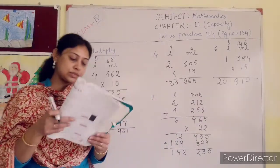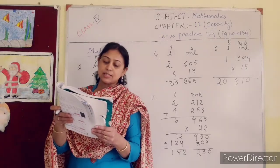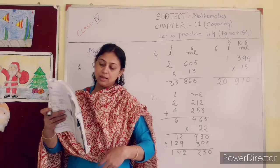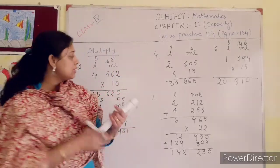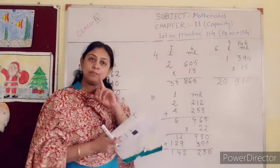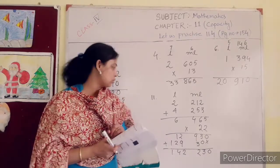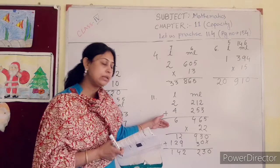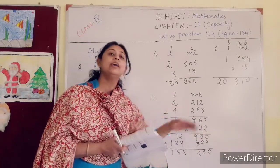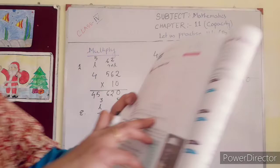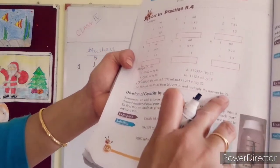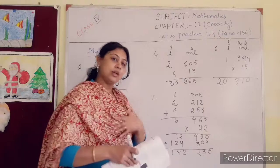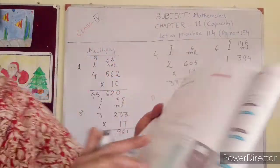Number 12. Subtract 19 liter 317 ml from 28 liter 279 ml, and multiply the answer by 24. In the same way you will solve 12. First you subtract the two numbers, whatever result you get, then multiply that number by 24. After subtraction you will get your answer, and this answer you will multiply by 24.